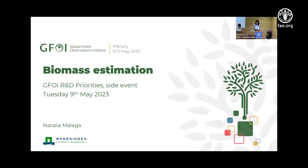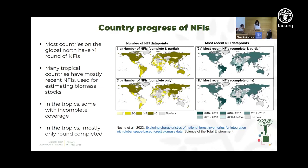Natalia Malaga from Wageningen University addressed biomass estimation and emission factors from an R&D perspective. If we're talking about biomass estimates and emission factors, we have to talk about national forest inventories (NFIs), as they are the main source of information countries use to build their reports. There is a clear difference globally — most countries in the Global North have at least one round of NFIs implemented, whereas in many tropical countries, NFIs are quite recent.